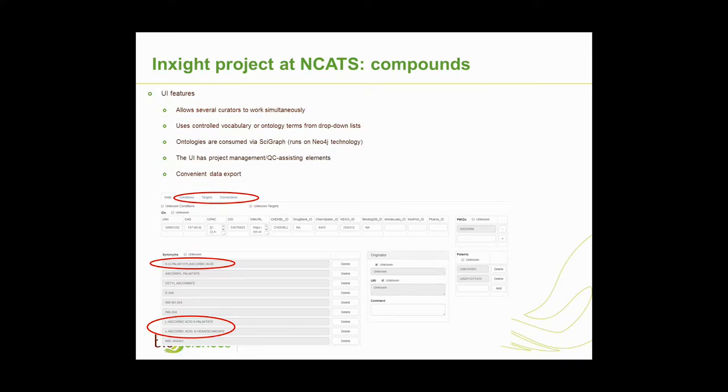In simplest form, our data schema resembles a triangle: compound, target, and indication — or condition, since not all conditions are diseases. That triangle has many-to-many relationships on each vertex, because a compound can treat more than one disease, affect more than one target, and a disease can be linked to more than one target. We capture multiple IDs as synonyms automatically, but curators must verify structures — for example, copying SMILES into a program to confirm correctness and review stereochemistry.